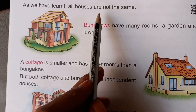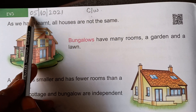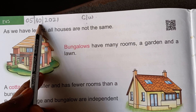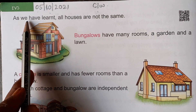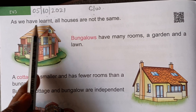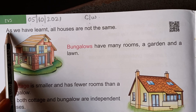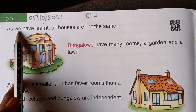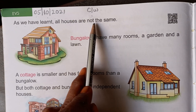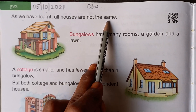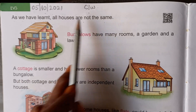See children, already we have written here class 1 and today is the 5th of October 2021. See here. As we have learned, all houses are not the same. What we have learned? That all houses are not the same.